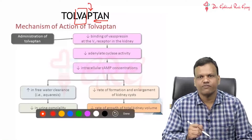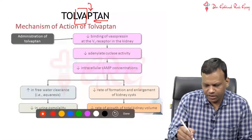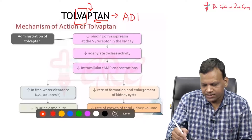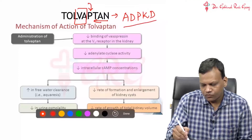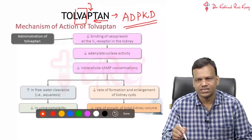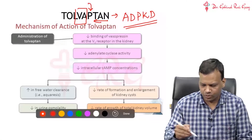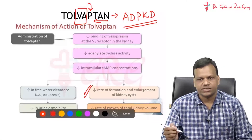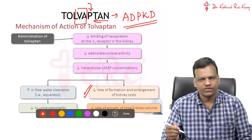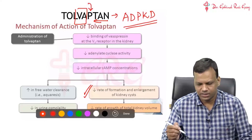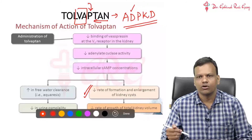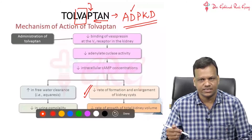This action of Tolvaptan is recently approved in a condition known as autosomal dominant polycystic kidney disease. When we use Tolvaptan in these patients, it leads to decreased formation of cysts in the kidney because water cannot be retained. There will be less formation of cysts, and if cysts are formed, they will not enlarge. Due to this reason, it has been approved for autosomal dominant polycystic kidney disease.